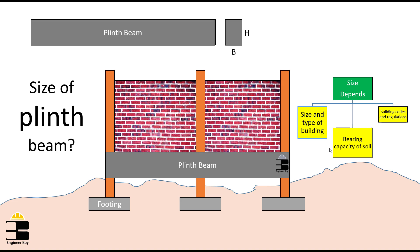However, in common practice and based on some thumb rules, the height of the plinth beam is usually kept between 225 mm to 450 mm. And the width is typically kept equal to the width of the masonry or up to 300 mm.